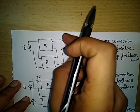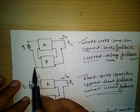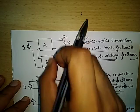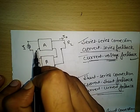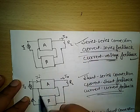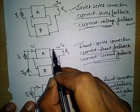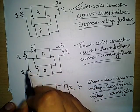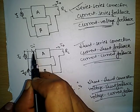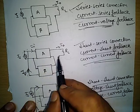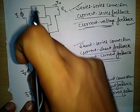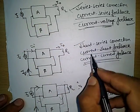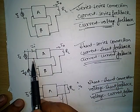Similarly, current is taken from the output and applied as a voltage in series at the input — this is current-voltage feedback, also called current series feedback. The connection is series at input and series at output, so series-series connection. Another type: current taken from output and added to make the input current — this is current-current feedback, or current shunt feedback, with shunt at input and series at output, so shunt-series connection.